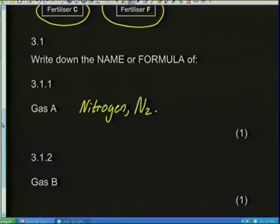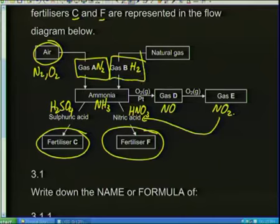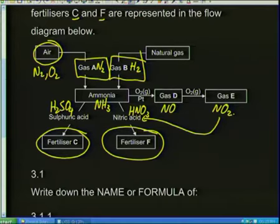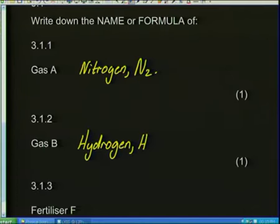Question 3.1.2 asks for gas B. A lot of students don't actually know where hydrogen comes from if it doesn't come from the chloralkali process. But I can play detective: nitrogen plus something goes to make ammonia — that something must be hydrogen. Hydrogen is the other gas I need, and that's what we make from natural gas. Gas B is hydrogen, H2. Those are the two chemicals I need to make ammonia.